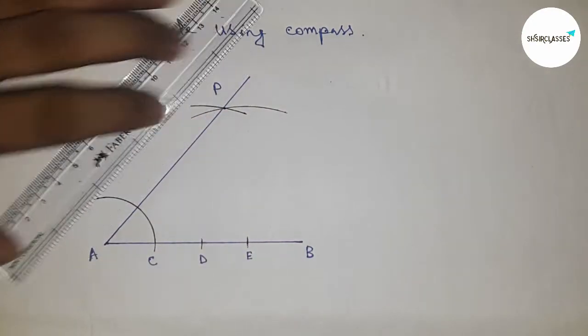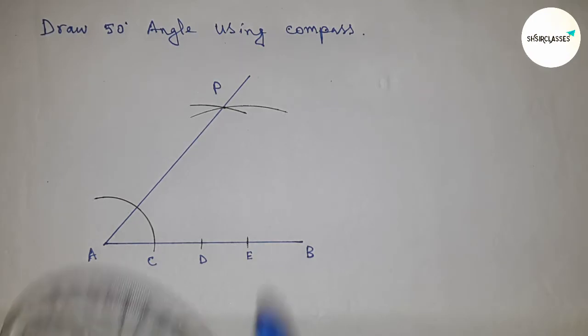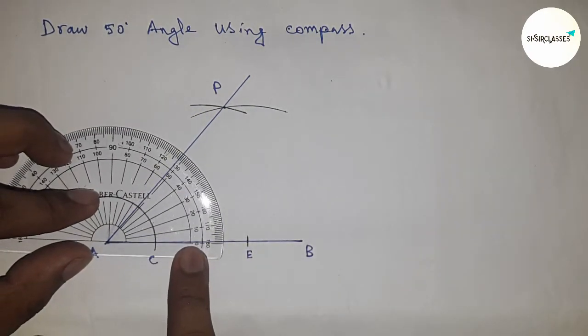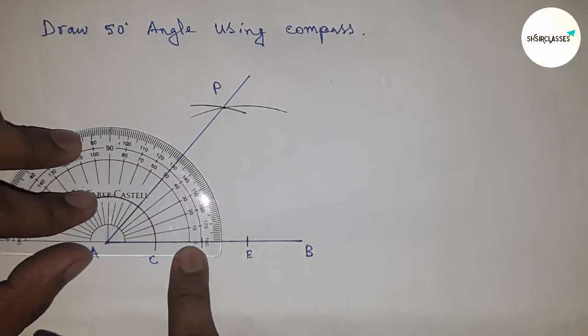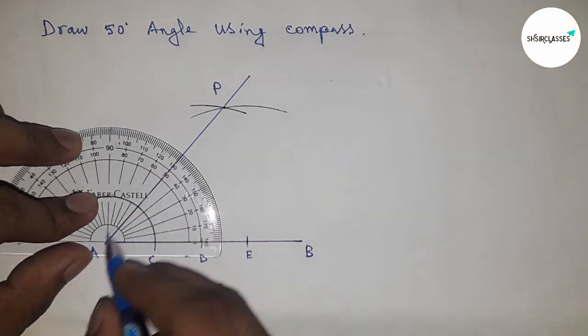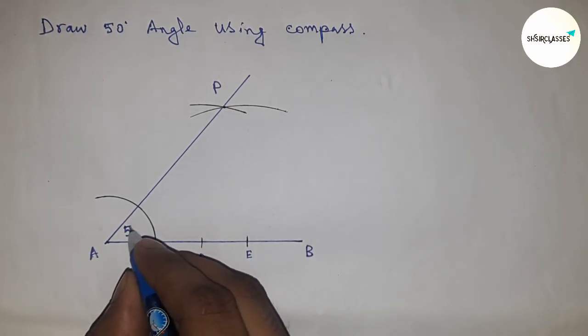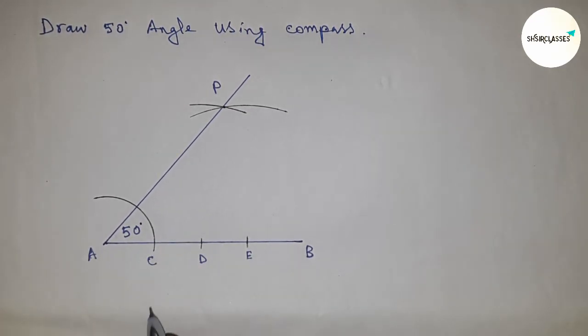So joining this, we got a 50-degree angle. Now checking whether it is 50 degrees or not. This is perfectly 50 degrees. Therefore, angle PAB equals 50 degrees.